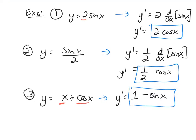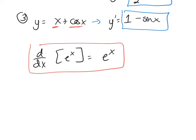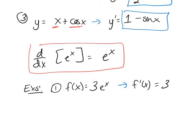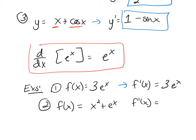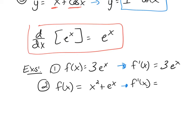Now that we know sine and cosine, let's talk about the derivative of e to the x, our exponential function. The derivative of e to the x is just e to the x — a nice and easy derivative to remember. For example, the derivative of 3e to the x is 3 times the derivative of e to the x, which is just 3e to the x. And if the function is x squared plus e to the x, the derivative is 2x plus e to the x, using the power rule on x squared.